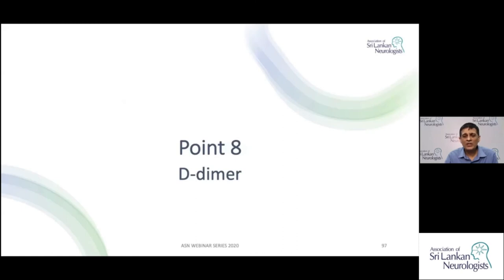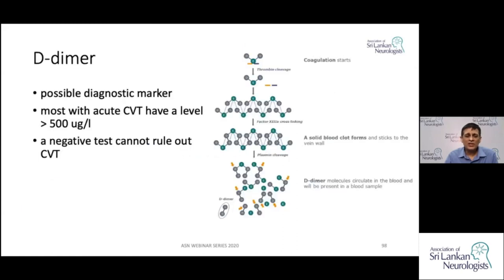Point eight: a quick word about D-dimer. D-dimer is a useful marker to diagnose thrombosis, and in acute situations you might find a level more than 500 micrograms per litre. However, it is not always elevated — a negative result will not rule out CVT, but a positive result is useful when found.